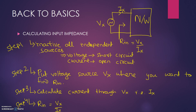So what are the steps to calculate? First, we have to deactivate all the independent sources — this is very important. We have to short circuit the voltage source and open circuit the current source. Then we have to put a voltage source Vx where we want to find the input resistance, and then find the current Ix through that voltage source Vx.